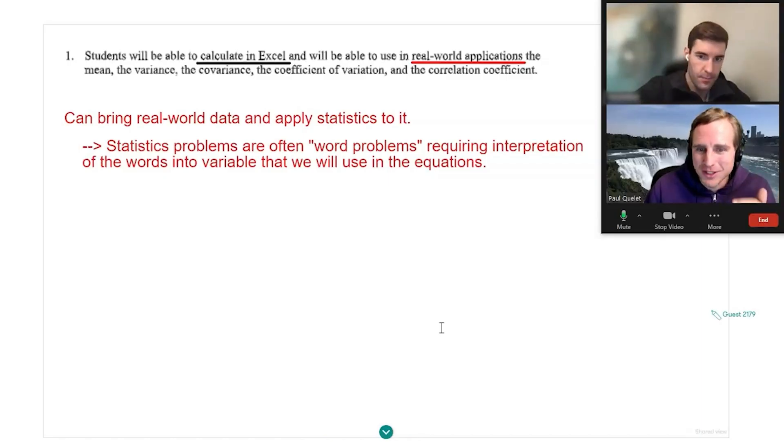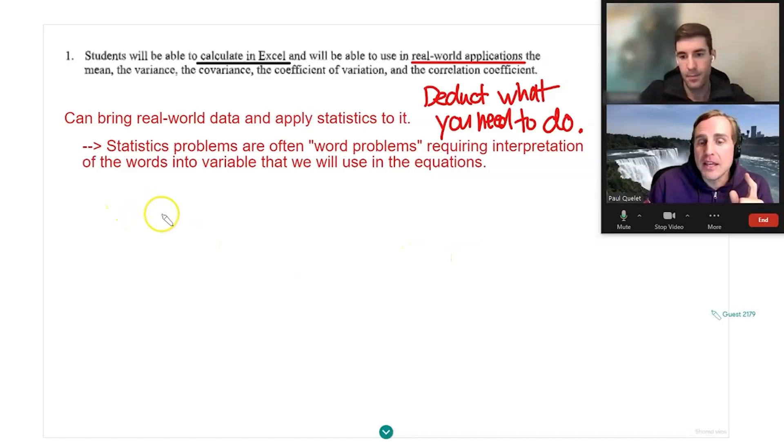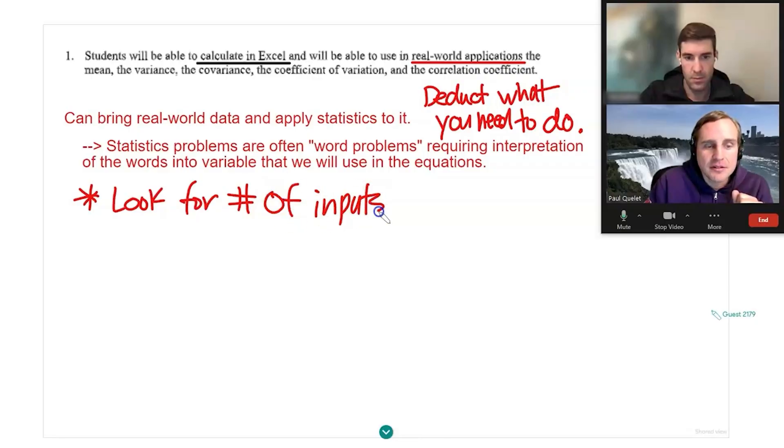One thing that's unique about statistics class is anytime you first learn something, you learn just the equation and just the concept, but almost immediately you start applying it. So just one thing that you definitely need to know is that statistics problems are often what we call word problems in math requiring interpretation of the words into variables that we will use in the equations. One of the most obvious signs is to look for the number of inputs. This is important. So if they only give you, let's say two given values, there's only certain equations you can use. But if they give you like a bunch of given information, you probably have to go through a longer calculation.